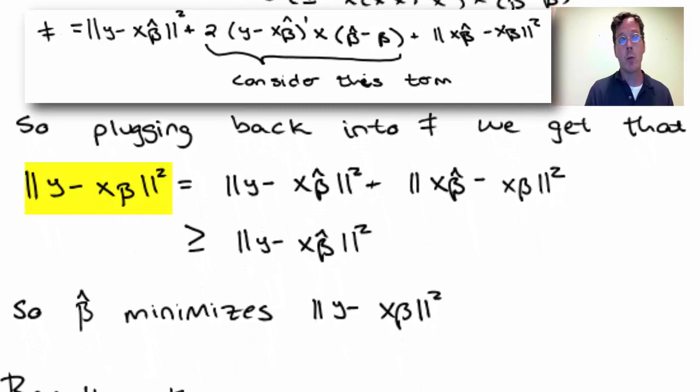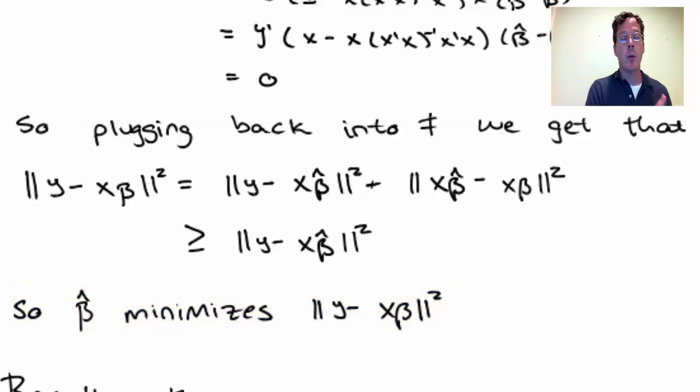So we get that the norm of y minus x beta squared equals the norm of y minus x beta hat squared plus the norm x beta hat minus x beta squared. If we drop this latter term, we can only get smaller because we've dropped something positive. So we find that y minus x beta norm squared has to be larger than y minus x beta hat norm squared. In other words, beta hat has to be the minimizer of y minus x beta because any other value yields a bigger norm.